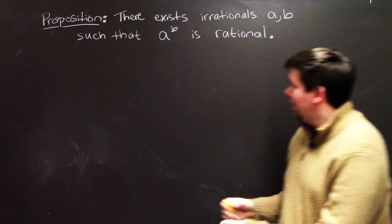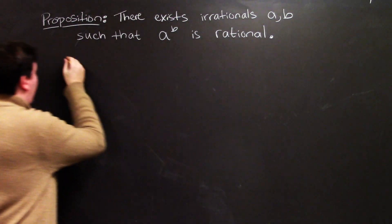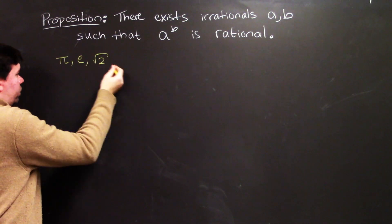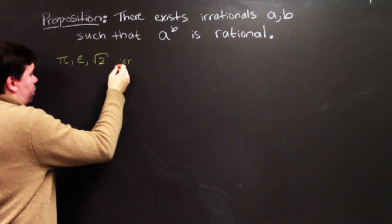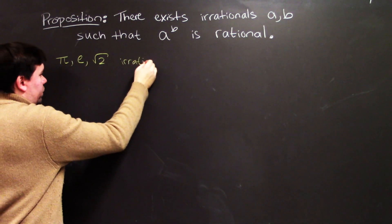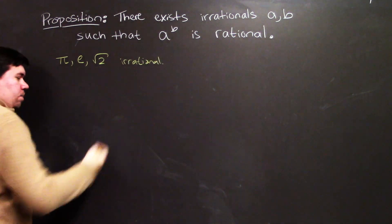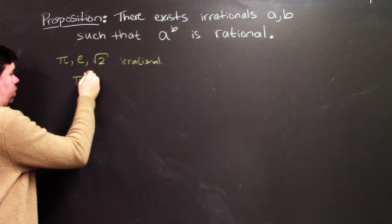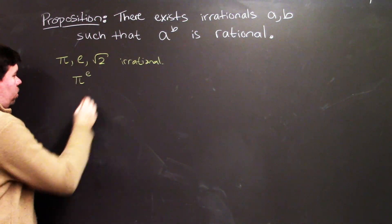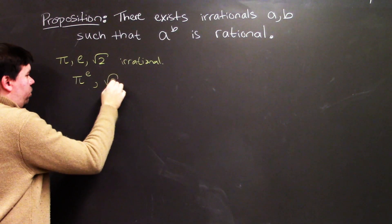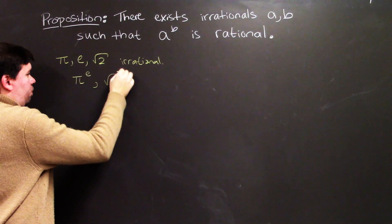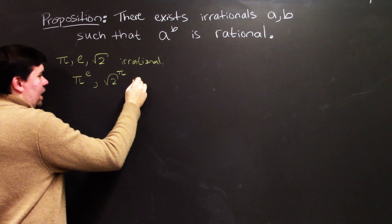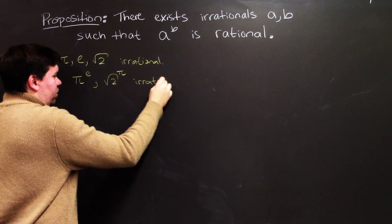You might know that pi, e, and the square root of 2 are all irrational numbers. But what if you take something like pi raised to the power of e, or the square root of 2 raised to the power of pi? Are these necessarily irrational, or could they be rational?